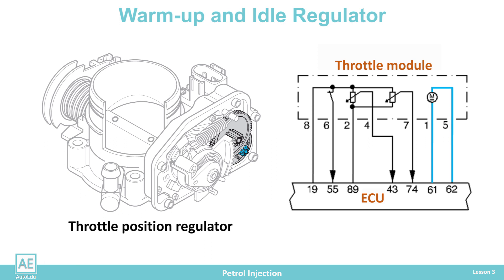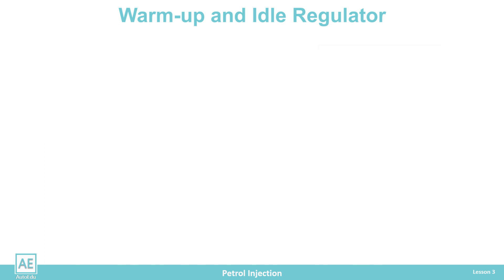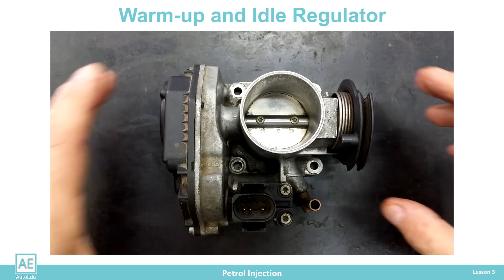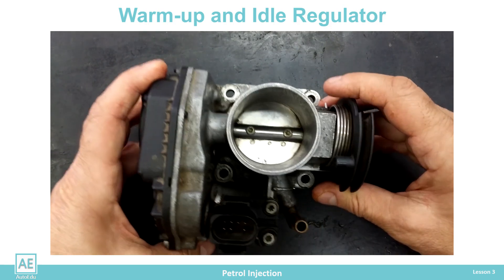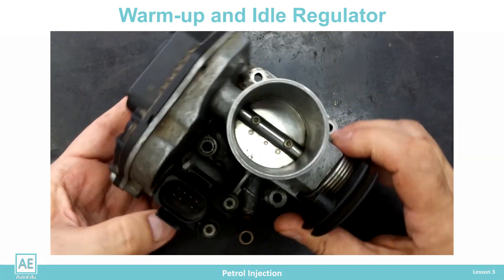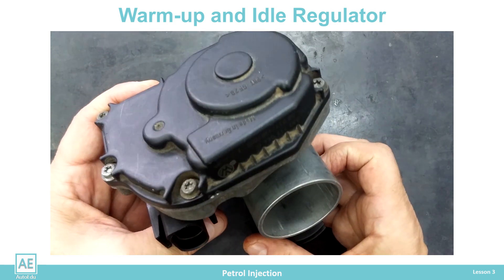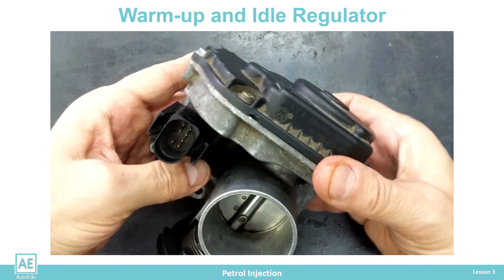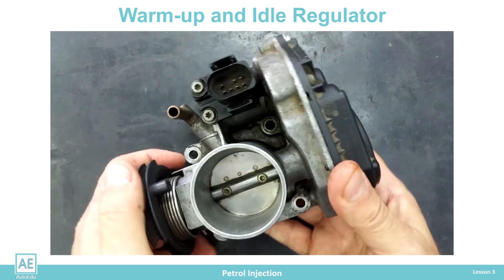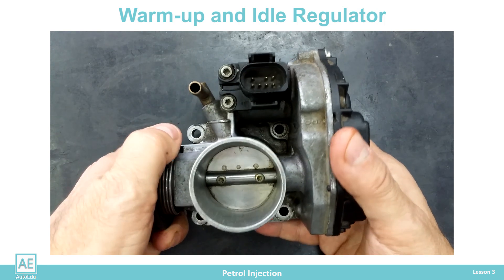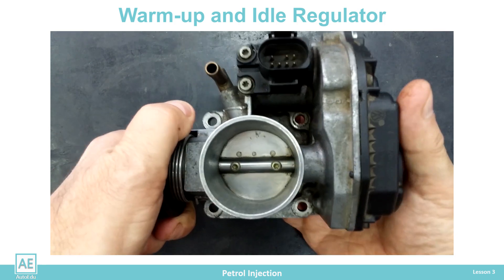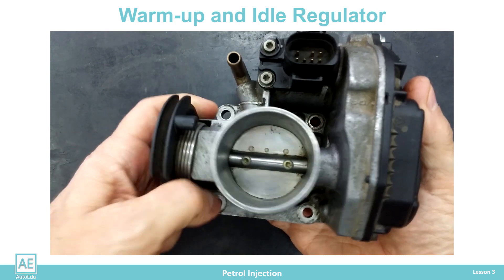Short to ground and open circuit or short to plus power supply. This type of regulator without a bypass line, with integrated throttle position monitoring and idle speed control functions, and a compact throttle module has proven to be a good solution for electronic air intake control.